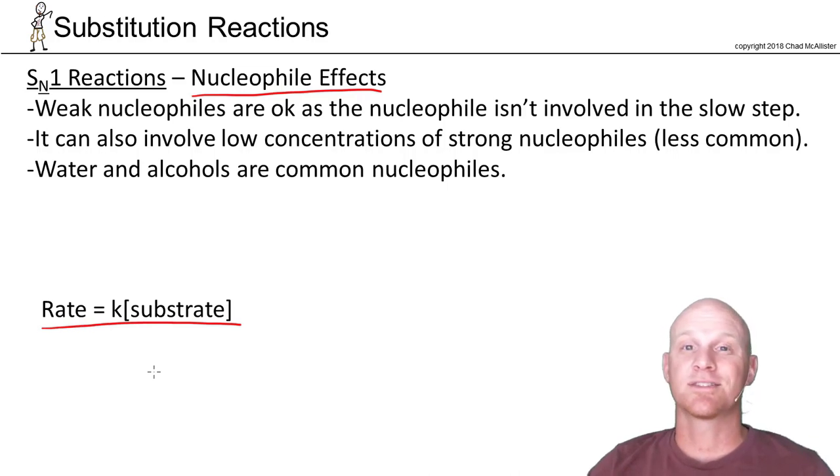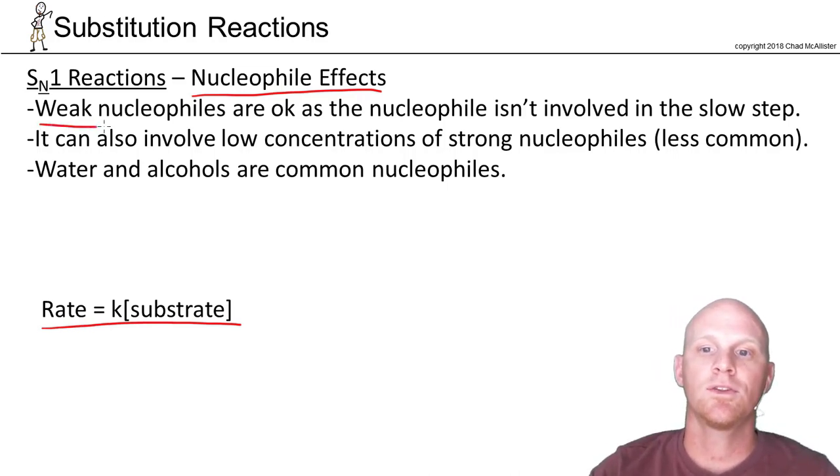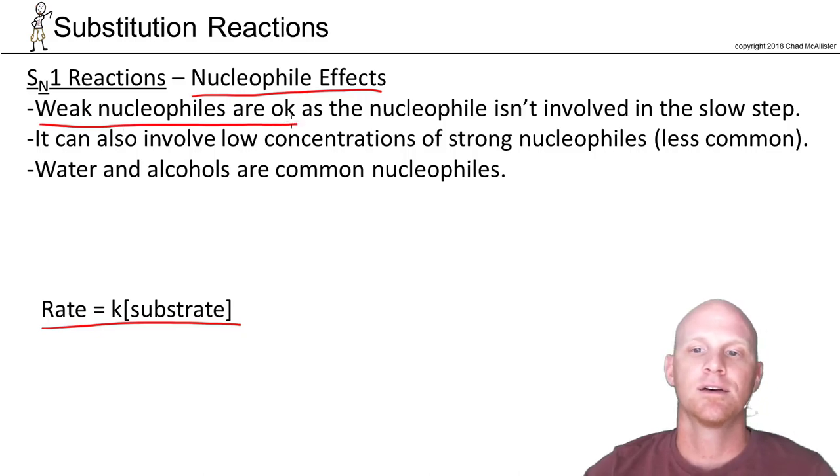And so what we find for an SN1 reaction is that the nucleophile is not that important. And we like to say that weak nucleophiles are okay. So that's in contrast to what we saw with SN2. For SN2 reaction, you have to have a strong nucleophile as it's involved in the rate determining step and shows up in the rate law.